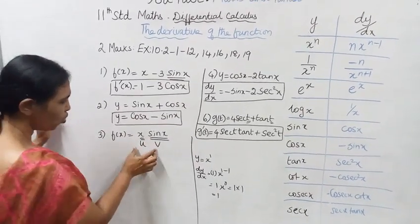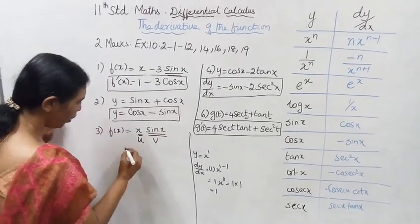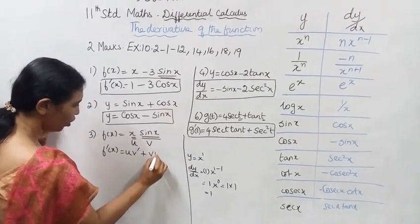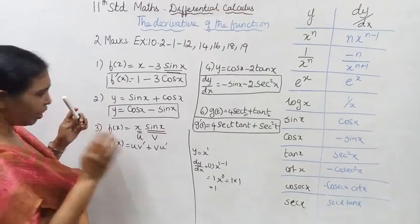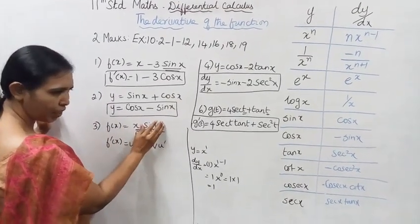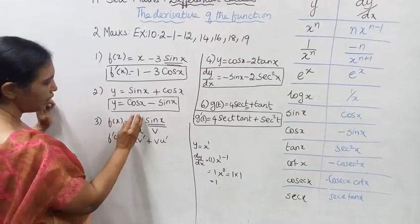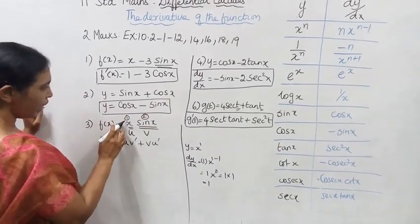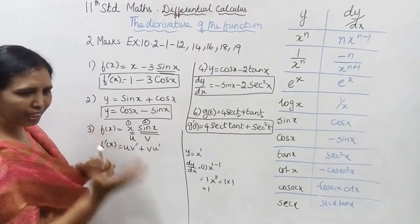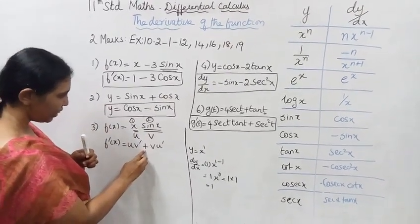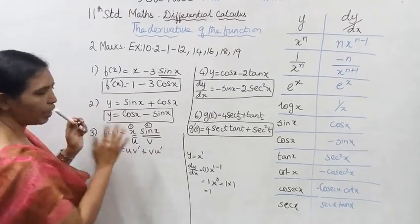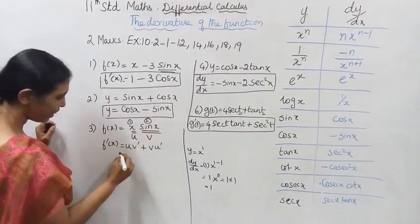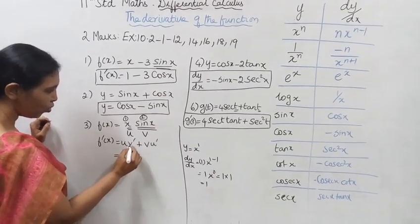Using the UV product rule formula: f dash of x = u·v dash plus v·u dash. Here u = x and v = sin x. Differentiating: u = x, so u dash = 1 (constant of x differentiated). v = sin x, so v dash = cos x. Therefore f'(x) = x·cos x + sin x·1 = x cos x + sin x.